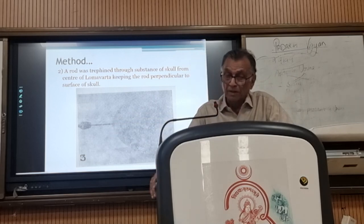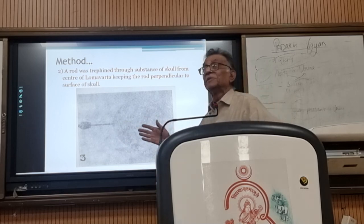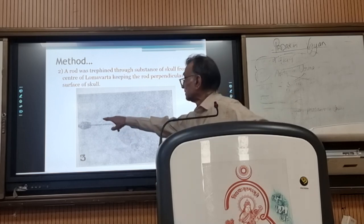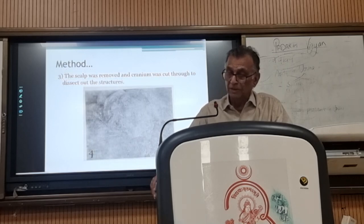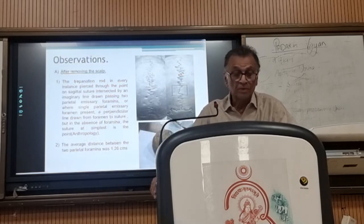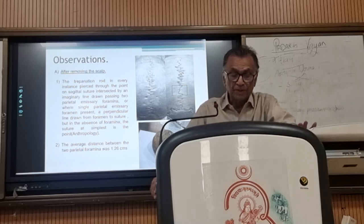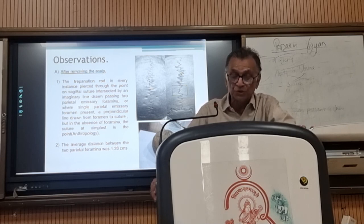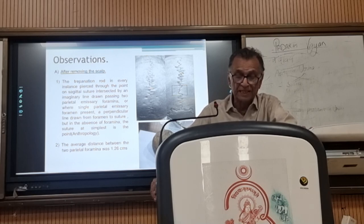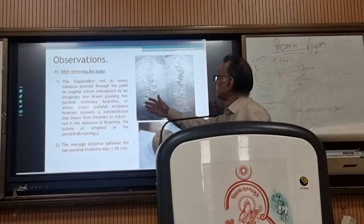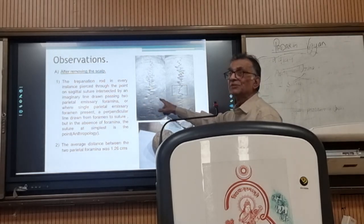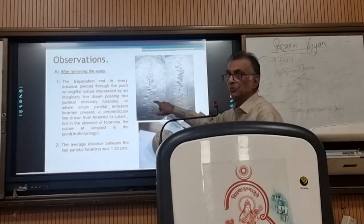The rod was perpendicular to the surface of the skull so that other structures may not be damaged. The scalp was removed and cranium was cut through to dissect out the structures. After removing the scalp, the trepanation rod in every instance pierced through the point on the sagittal suture, intersected by an imaginary line drawn passing through the two parietal emissary foramina. When the scalp was peeled out, it is visible that there are two parietal emissary foramina, and the rod pierced through this, as shown in a previous slide.